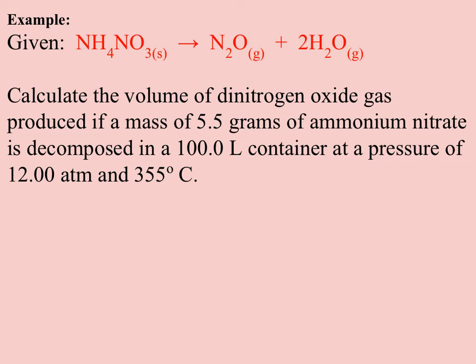In this case, dinitrogen oxide and water are produced from ammonium nitrate. The question asks to calculate the volume of dinitrogen oxide — I want liters of N2O — starting with 5.5 grams of NH4NO3. The problem states that 5.5 grams of ammonium nitrate is decomposed in a 100-liter container at a pressure of 2 atmospheres and 355 degrees Celsius. These conditions apply to the whole equation in a closed system, so pressure, volume, and temperature matter for the gas products, not the solid reactant.